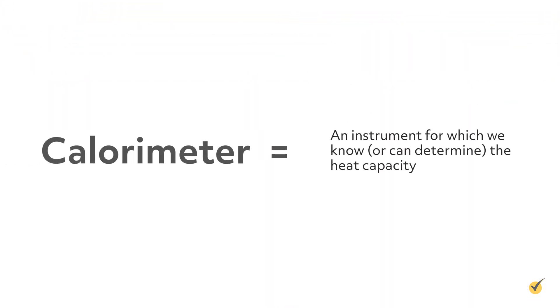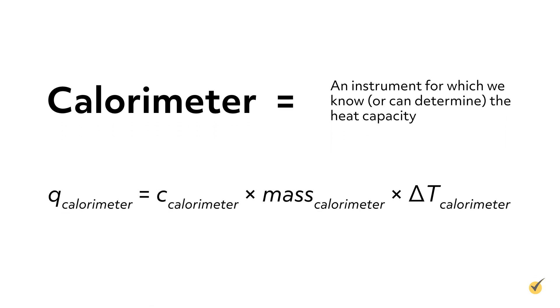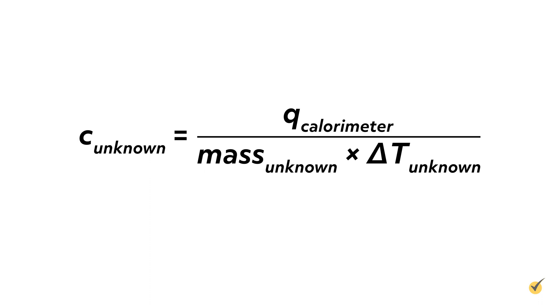Alright, let's wrap up by reviewing what we've learned. A calorimeter is an instrument for which we know, or can determine, the heat capacity. Which means we can calculate the heat released by a sample by measuring the temperature change of the calorimeter using this equation. For our examples today, the active part of the calorimeter was water, which means we dealt with the specific heat capacity and weight of water. But for more complex setups, this will vary. We then assume that the heat absorbed by the calorimeter was equal and opposite to the heat released by the substance. So by knowing the weight and temperature change of the unknown, we can calculate the unknown heat capacity.